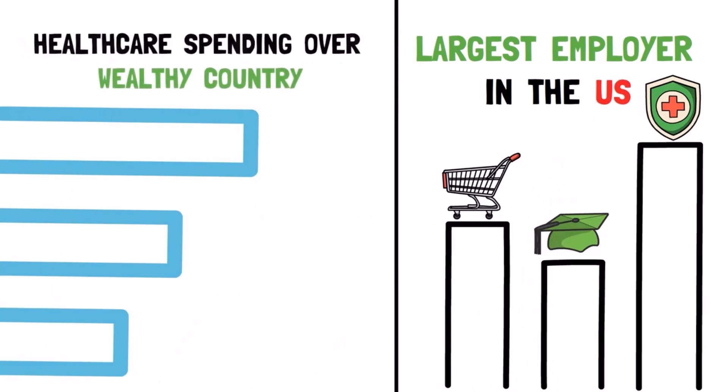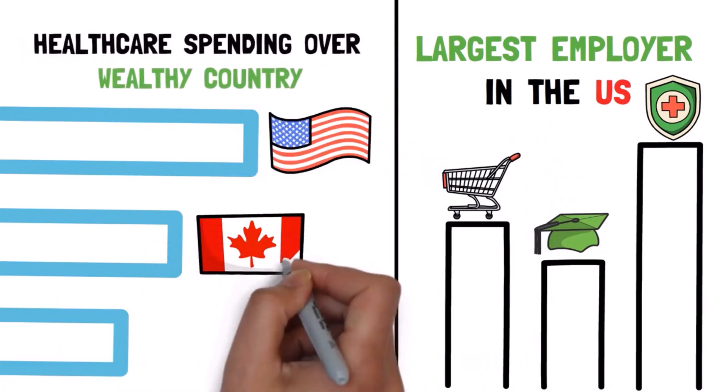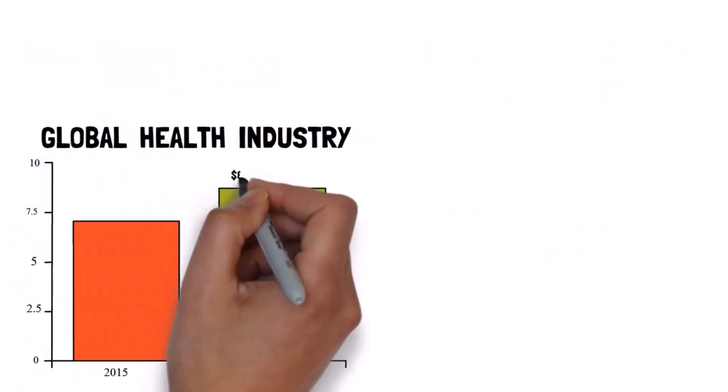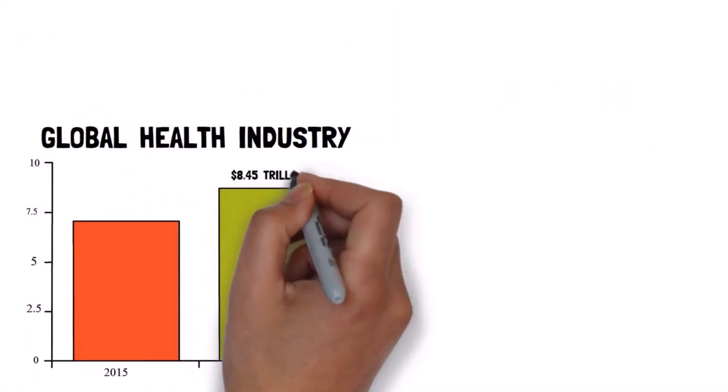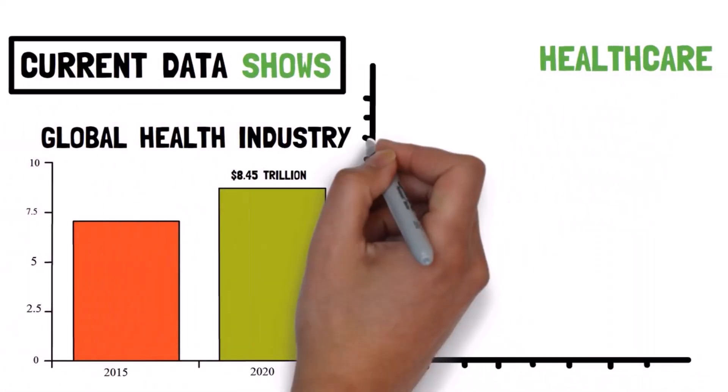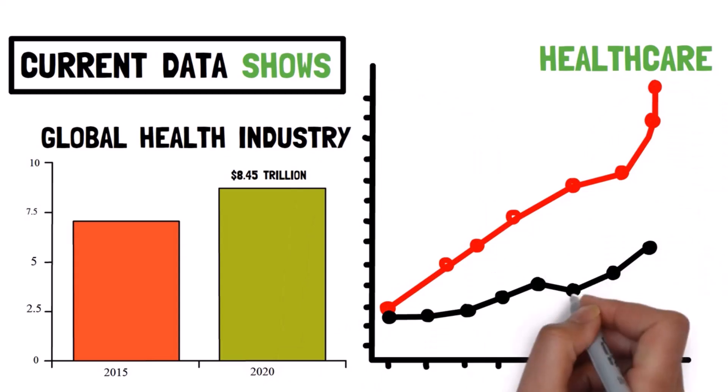In fact, the United States spends far more on healthcare than the rest of the globe. The global health industry was worth $8.45 trillion dollars in 2018. Current data shows that healthcare is one of the world's largest and fastest growing sectors.